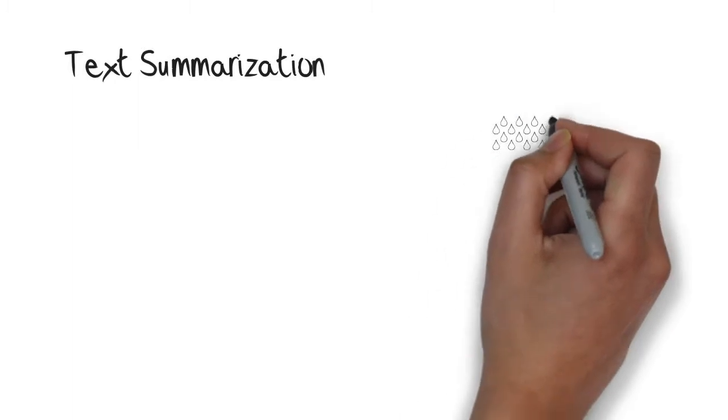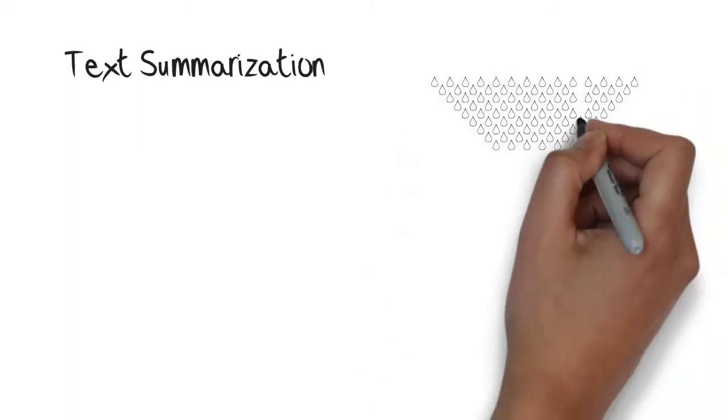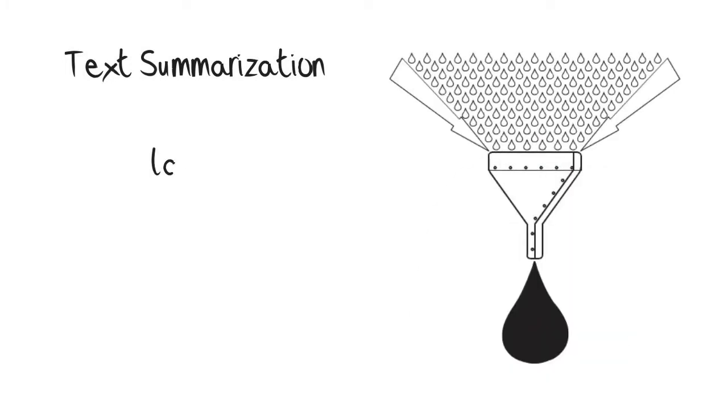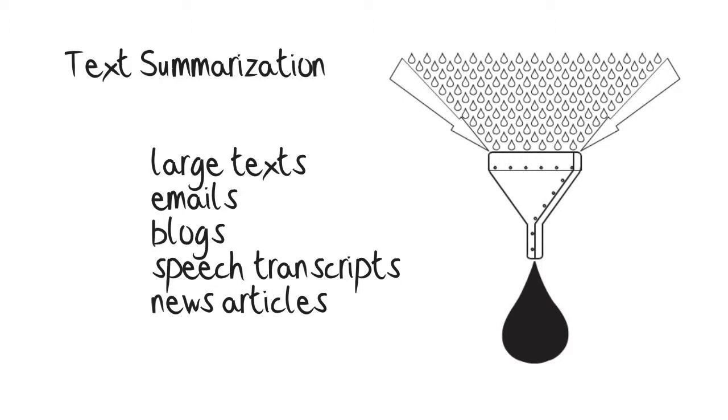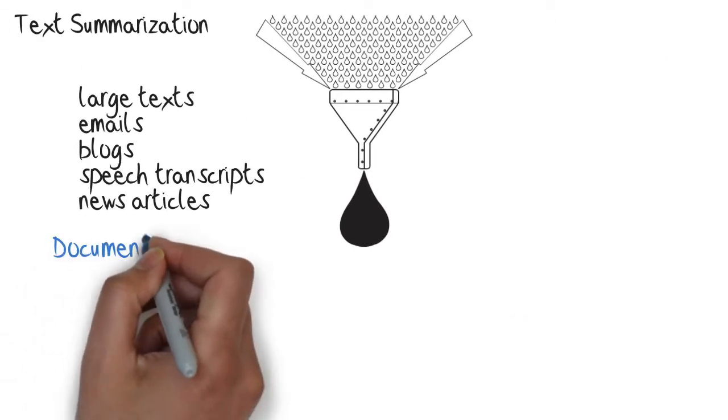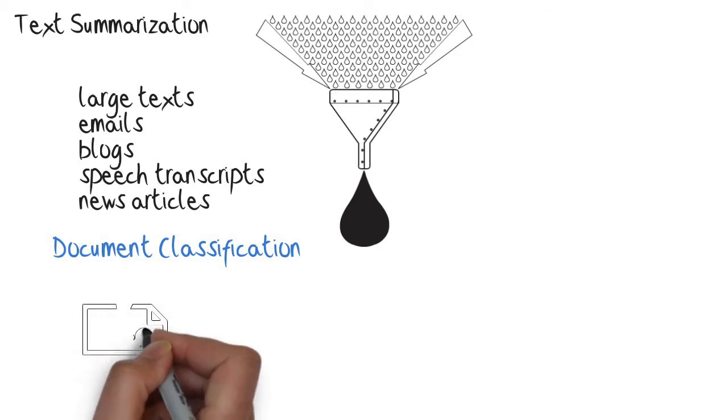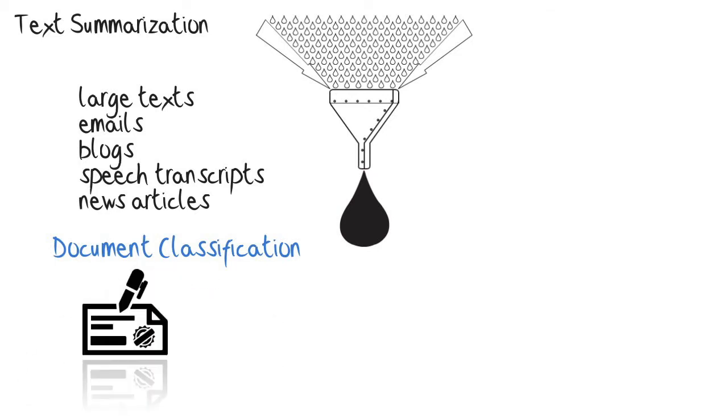Text summarization extracts a contextual summary from large texts, emails, blogs, speech transcripts, or news articles to aid in document and topic classification and indexing. OmniQuo can help legal departments to summarize customer testimonials by sifting through depositions and case notes.